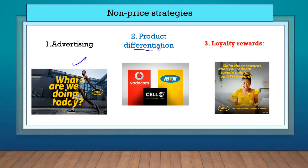Or they use product differentiation. Remember the products in oligopoly firms are homogeneous. They are the same. MTN offers you airtime just as well as Vodacom and Cell C. But they differentiate these products.